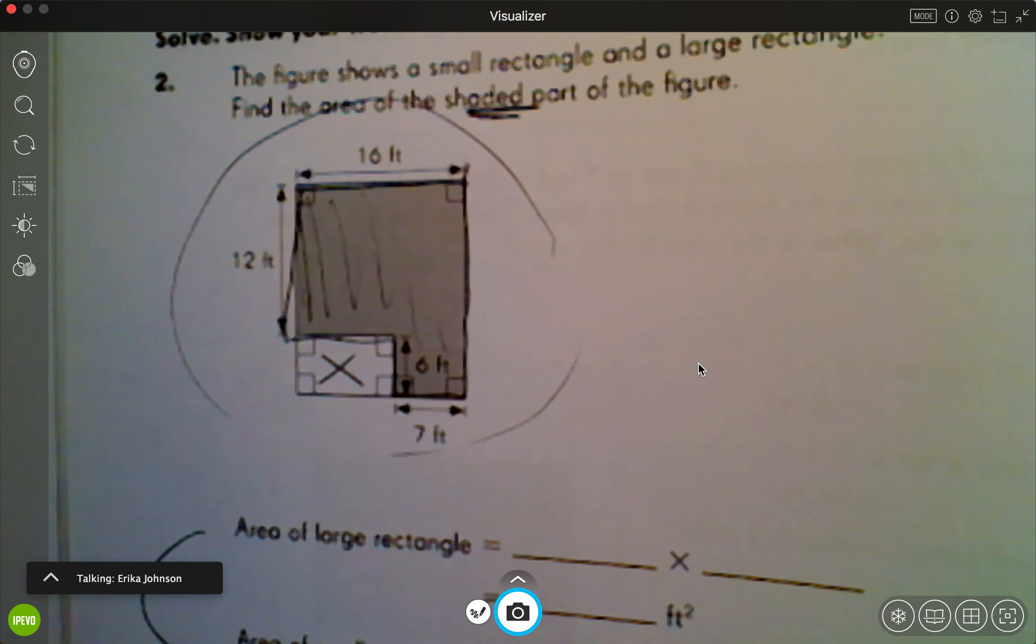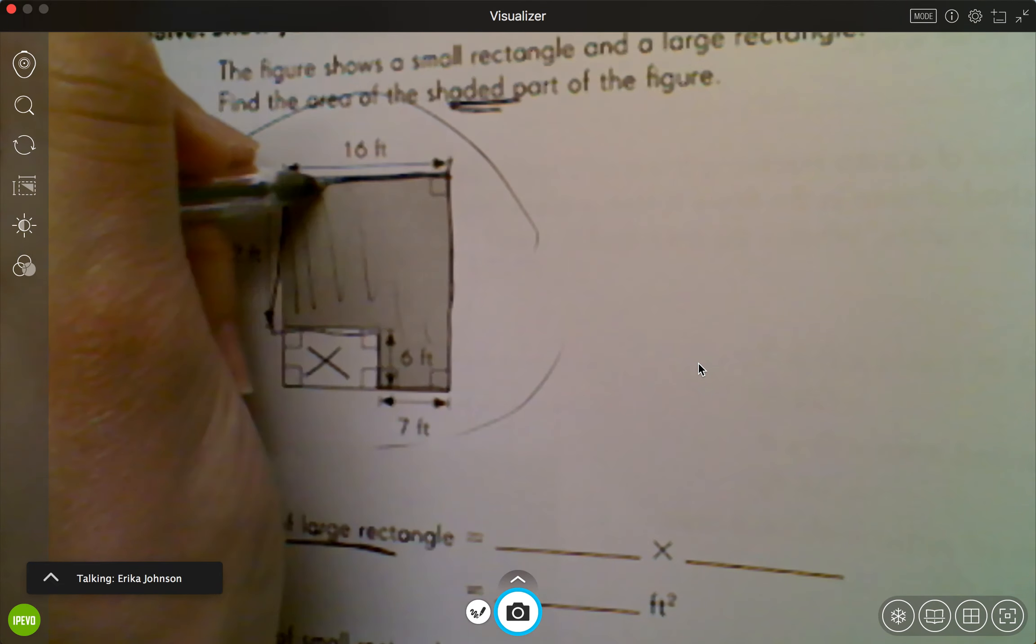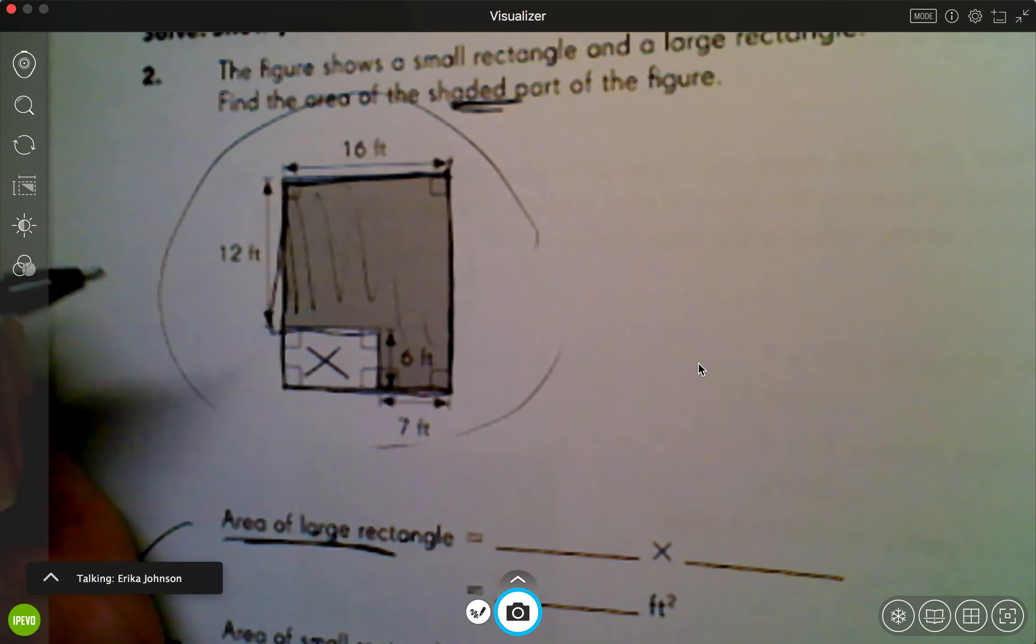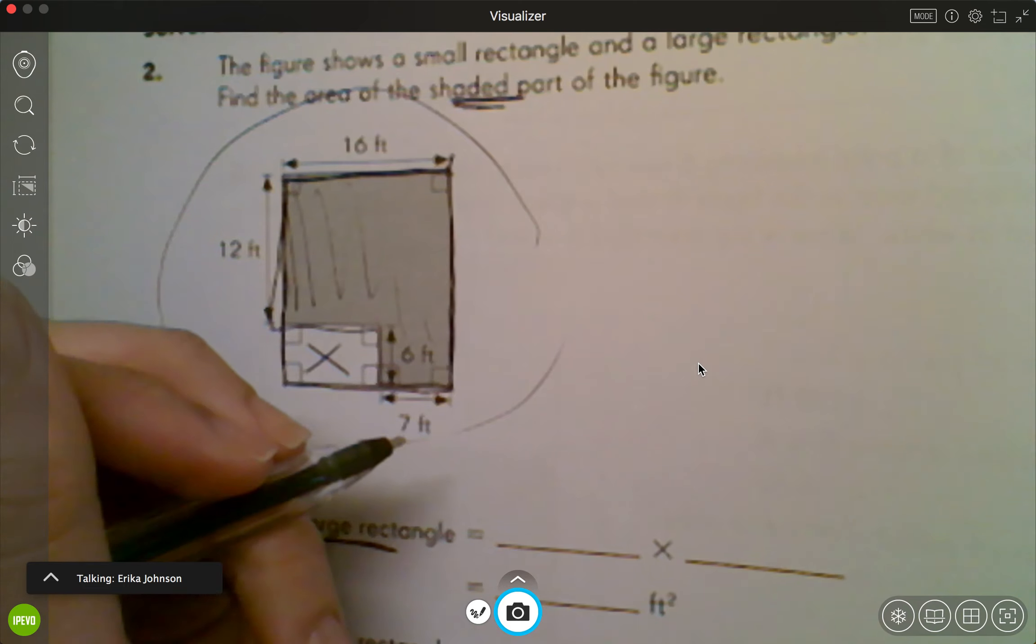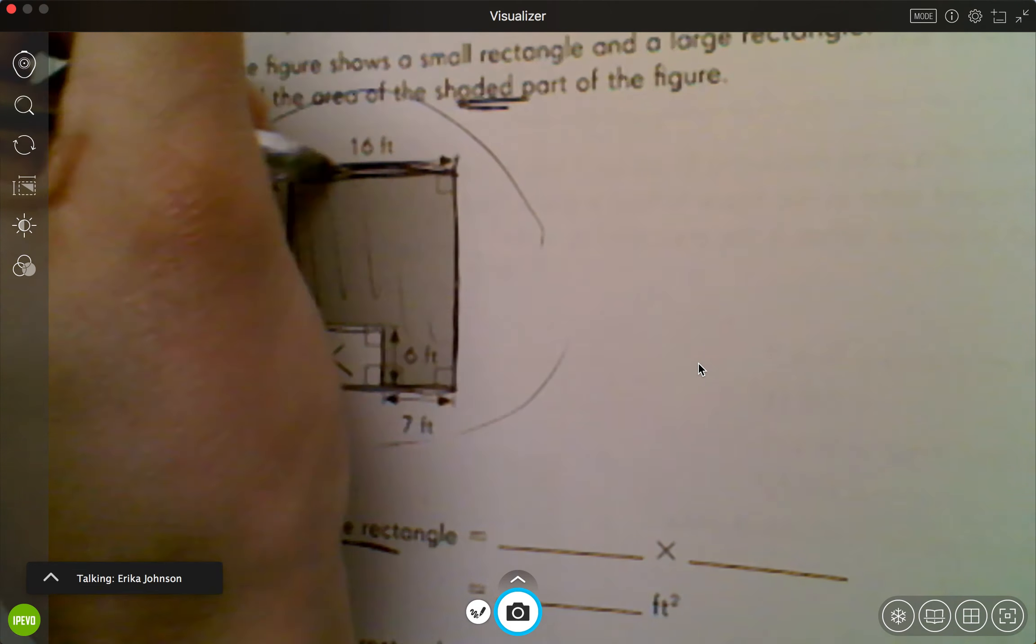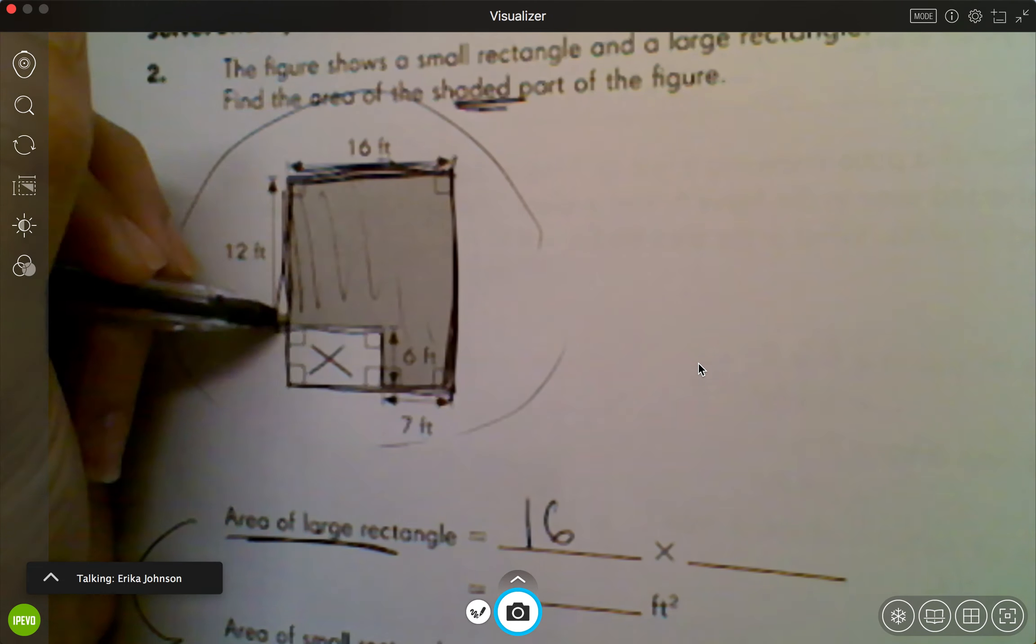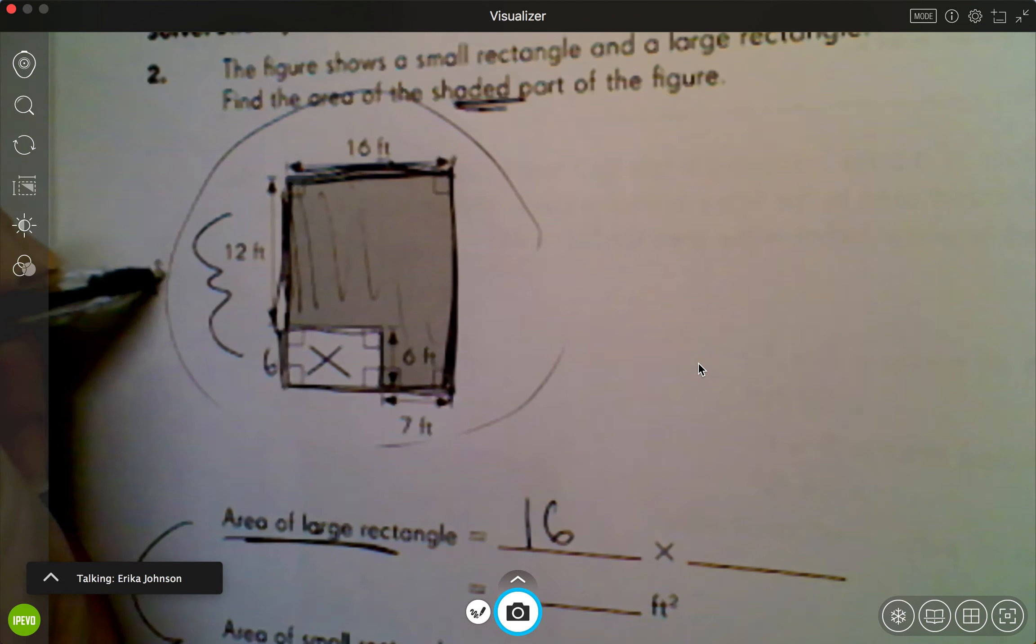So it says first find the area of the large rectangle, meaning this whole thing right here, the whole rectangle. So I know area is length times width, so how long it is times how wide it is. I know that this side of the thing is 16, and the long side of the whole shape, well this side's 12 and this side is 6, I know that whole side is 18.